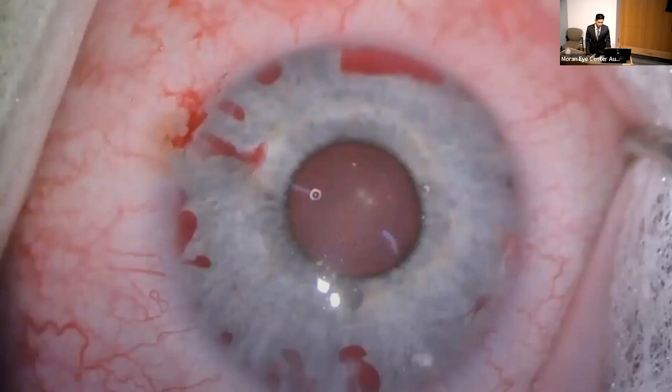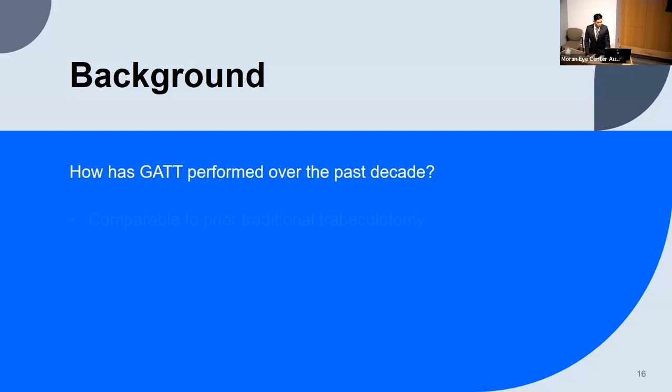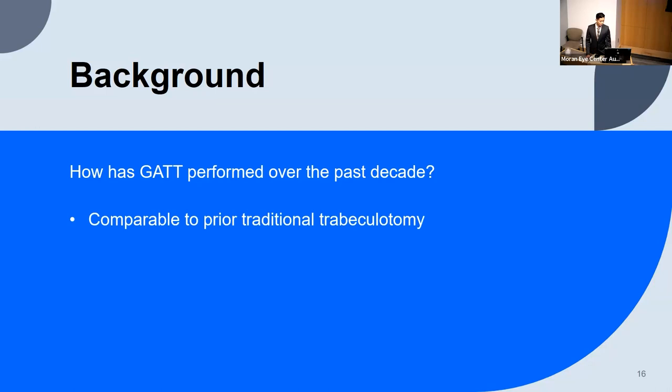Immediately after the procedure, there is commonly some AC hyphema and blood — which is often not a poor indicator; it's a pretty common finding. How has the GAT procedure performed over the past decade? It's a relatively new procedure, especially with the MIGS revolution, and has been shown to be comparable to the prior traditional trabeculotomy.